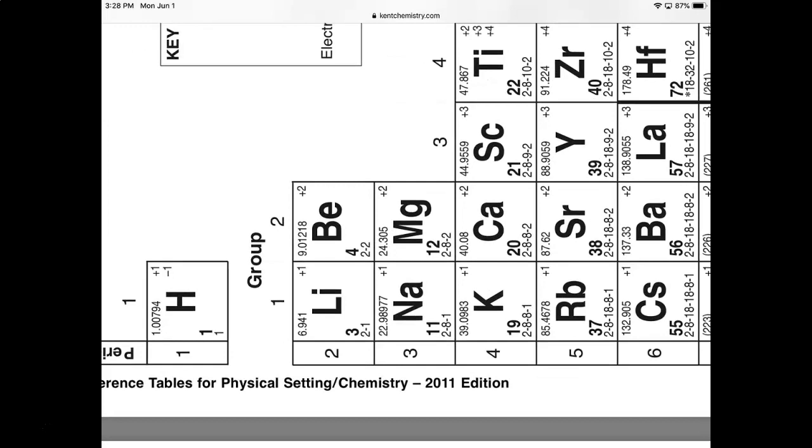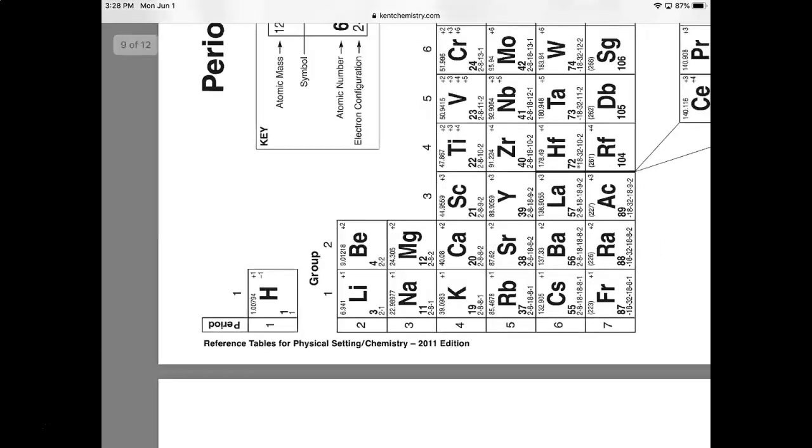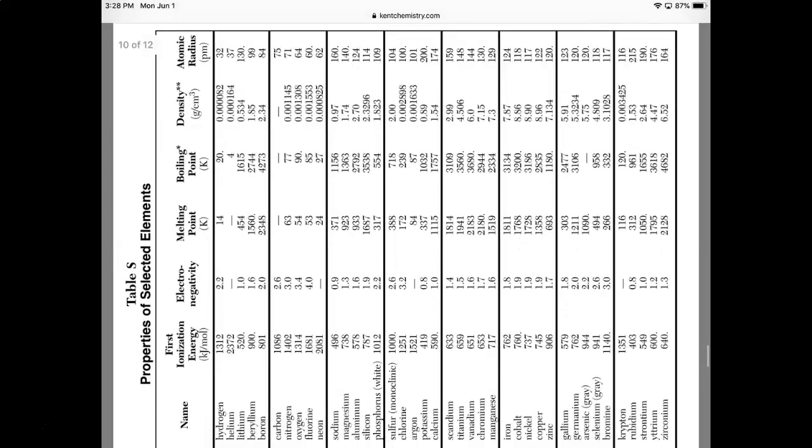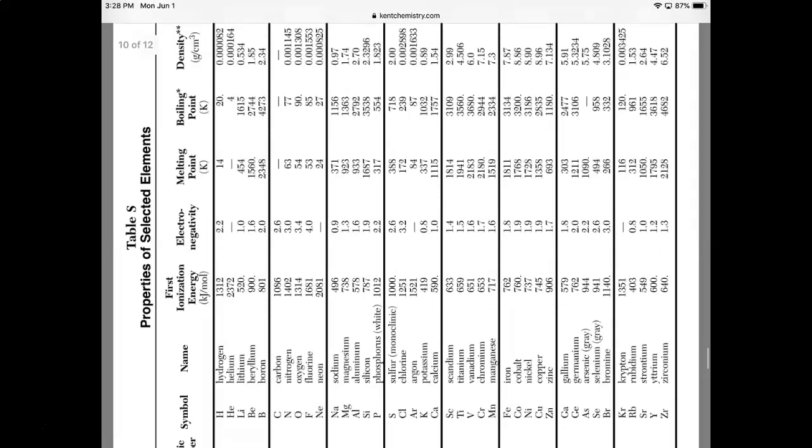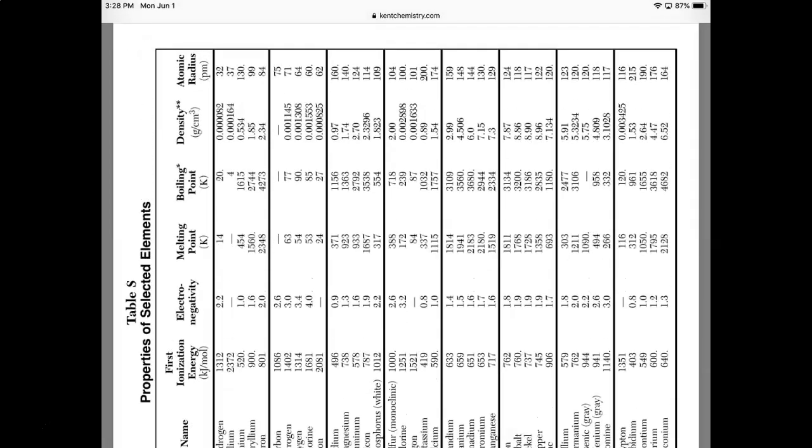Now let's say it's an across a period question. I would pick a period, so period 2 right here has Li and Be. I can just go to table S and I can say okay, Li's radius is 130 and Be's radius is 99. As I go across, the radius is going down.